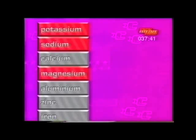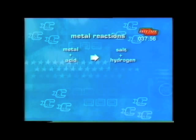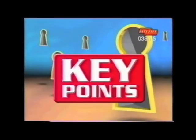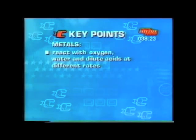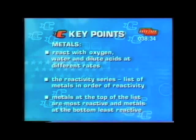So, the order going from the most reactive is magnesium, then zinc, and finally copper. We can also write word equations for these reactions. When metals react with acids, the pattern follows: metal plus acid makes metal salt plus hydrogen. For example, with magnesium, the word equation is magnesium plus hydrochloric acid makes magnesium chloride, the metal salt, plus hydrogen. The key points are that different metals react with oxygen in the air, water, and dilute acids at different rates, and that the reactivity series is a list of metals in order of reactivity — metals at the top are the most reactive, and metals at the bottom are the least reactive.